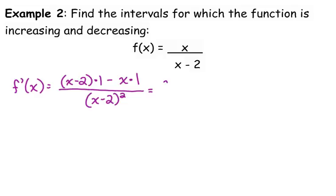We've got x minus 2 times 1, so that's just x minus 2, minus x times 1, so that's just minus x, and in this case the x's cancel, so all we're left with is negative 2 in the numerator.